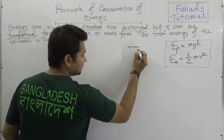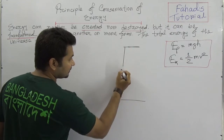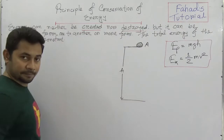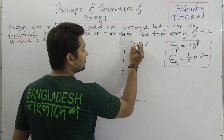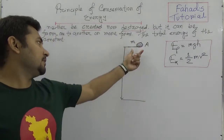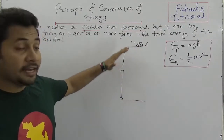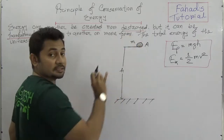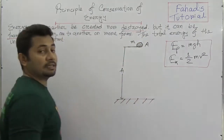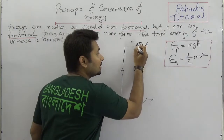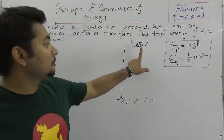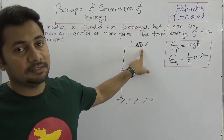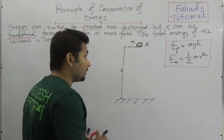Suppose an object is placed at height H from the ground, at position A. The mass of the object is M. When it is placed at rest at height H, the total energy is potential energy. Since there is no velocity at this position, the kinetic energy would be zero.